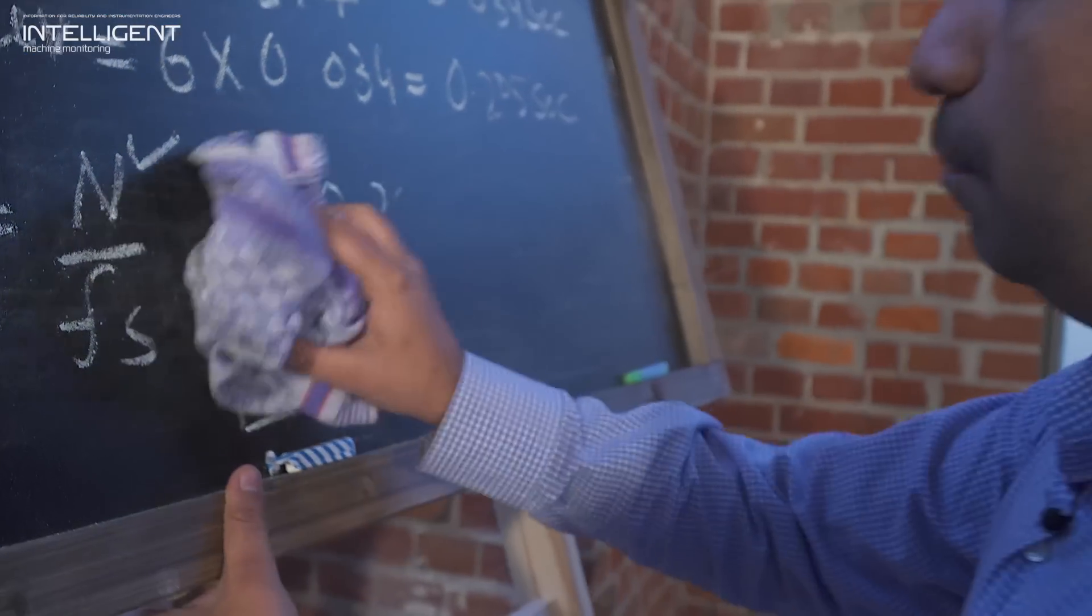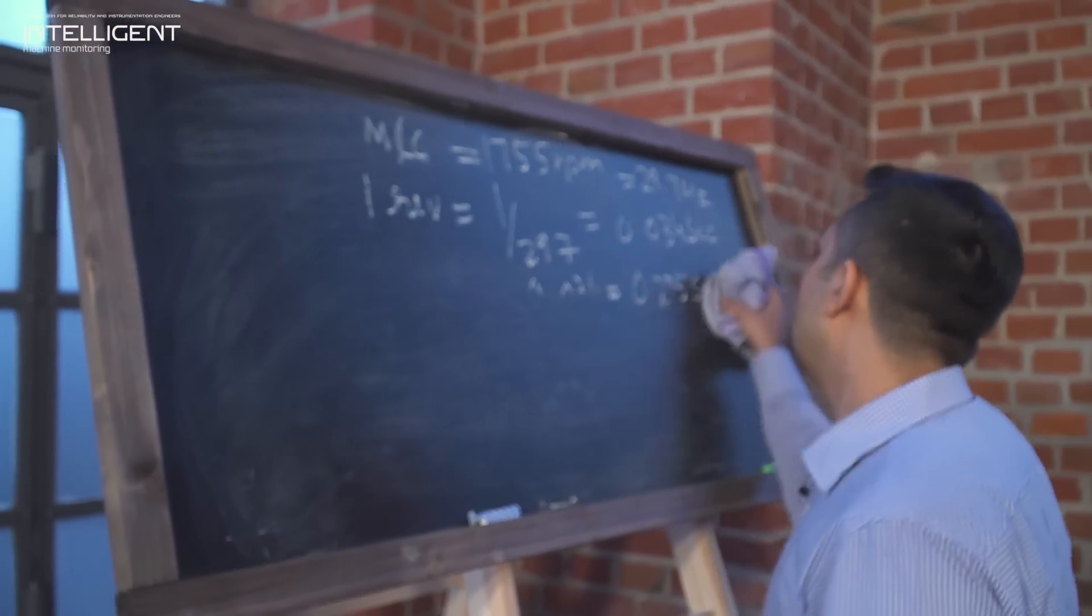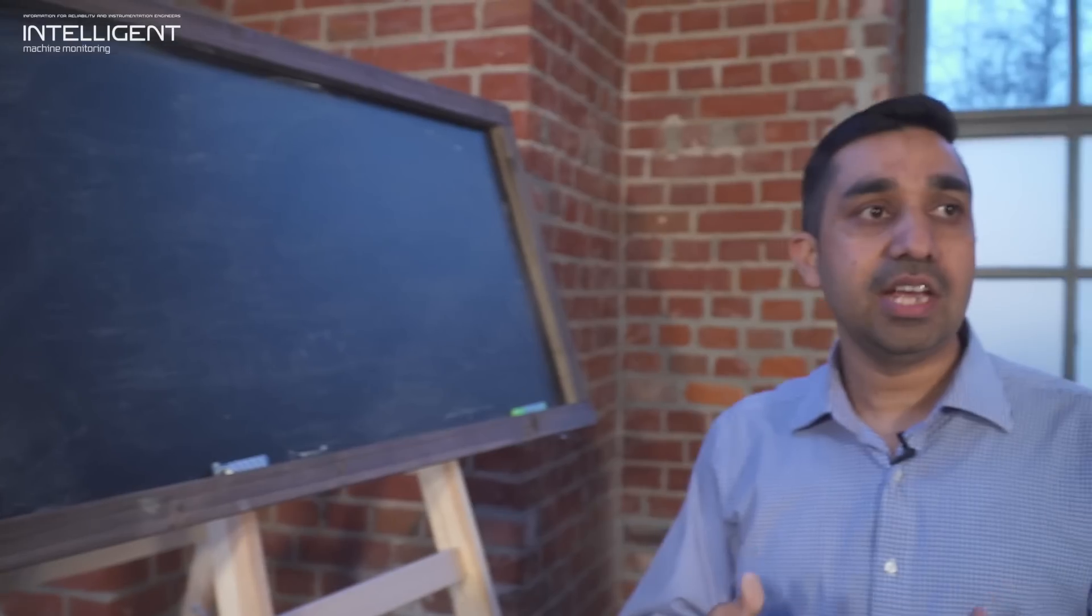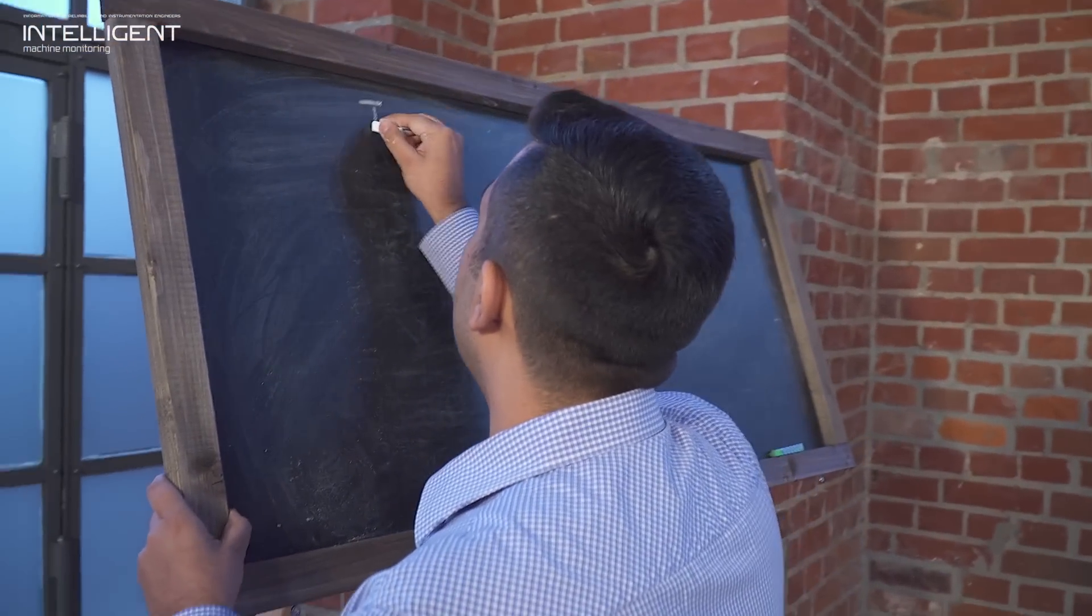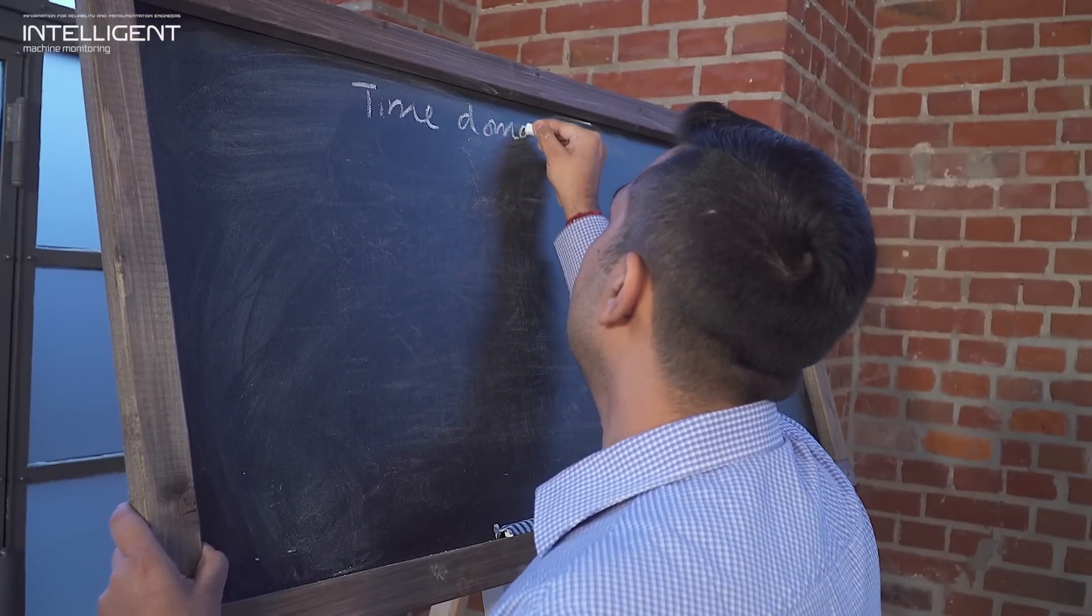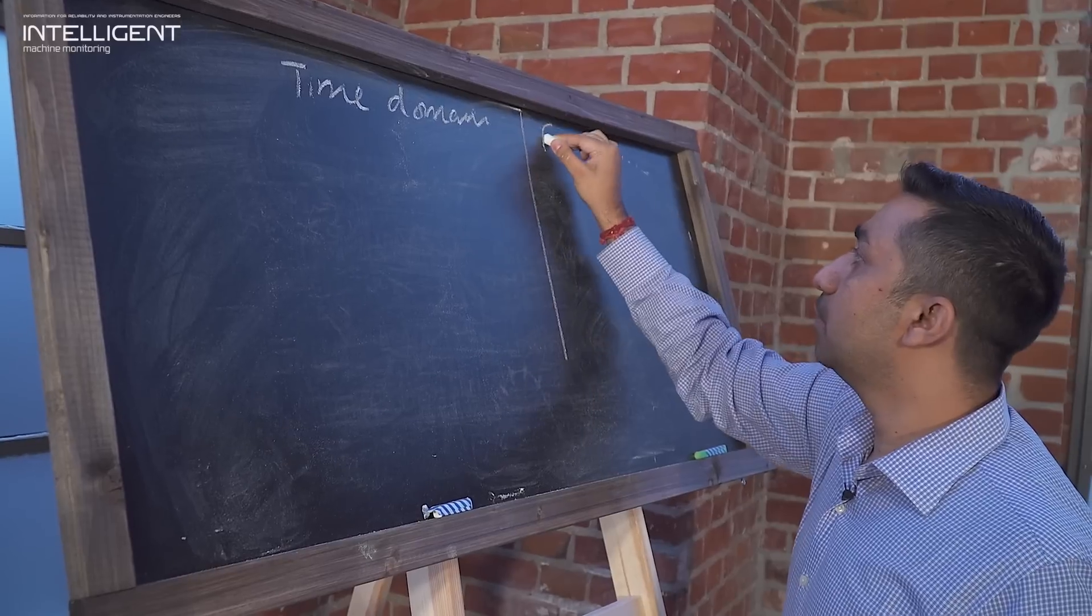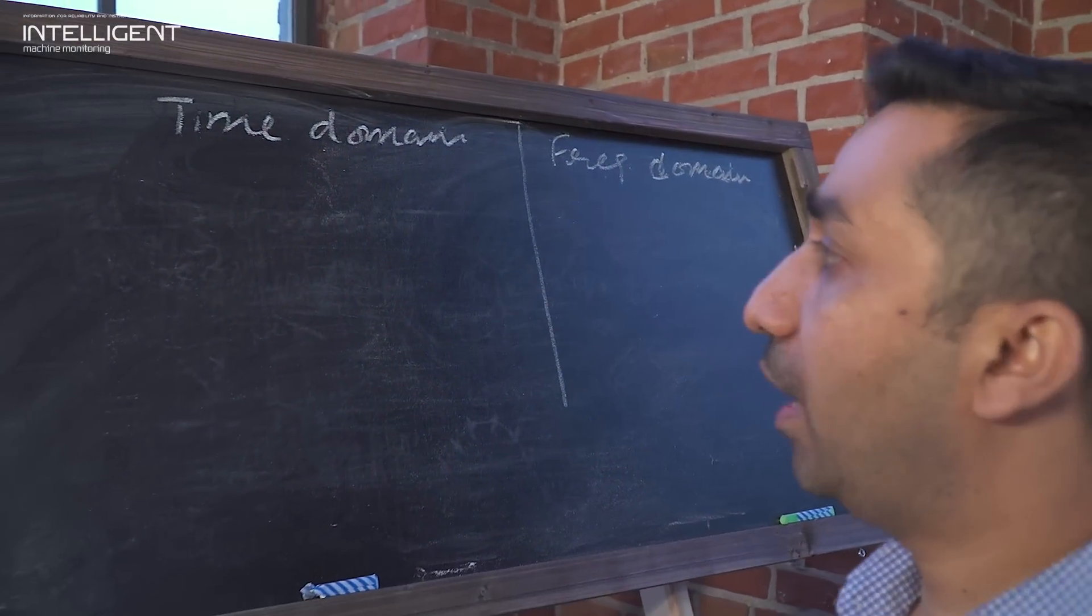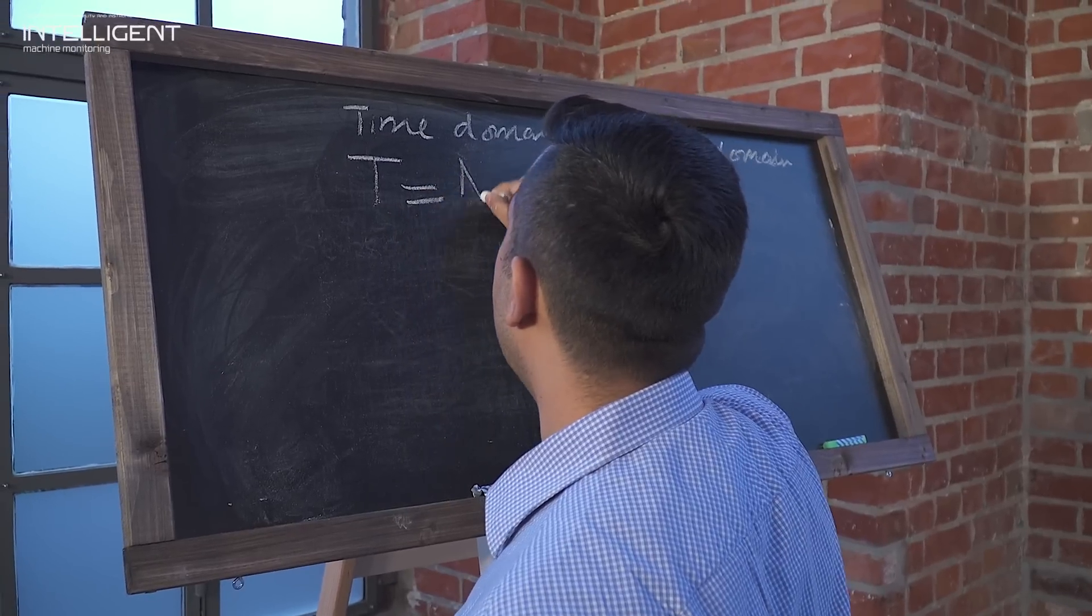If you have two of these parameters among three, you can calculate the other one. In most of the analyzers, most of the systems, you have an option to select time and number of samples. And the sampling rate would be calculated automatically, keeping in mind that you need to capture six revolutions and this many number of samples. So, now our aim is to compare these three parameters which we defined in time domain and to correlate these settings in frequency domain.